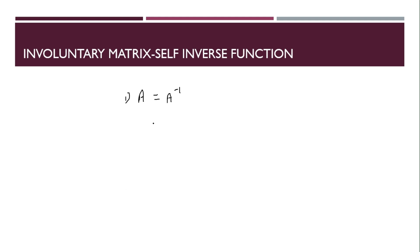If this is the condition, what else can be done? If you multiply both of the sides with A, what would you get? This will be A square equals I. Involuntary matrix can also be defined as a square matrix that multiplied by itself gives the identity element.